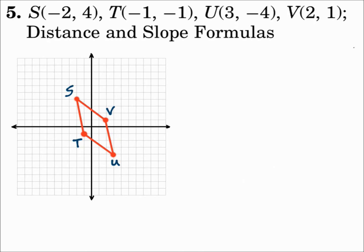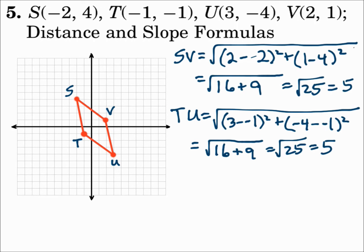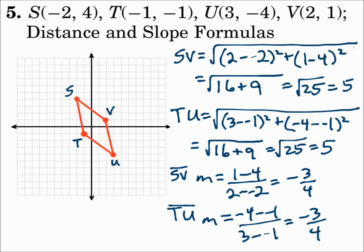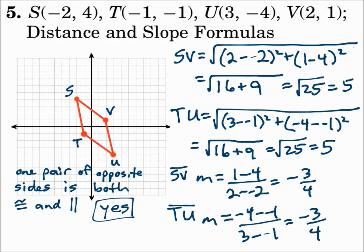Number five gives the vertices and says to use both the distance and slope formulas. Distance tells us if sides are congruent, and slope tells us if they're parallel. We check if one pair of opposite sides is congruent and parallel — sides SV and UT. Using the distance formula, each side has a length of 5, so they're congruent. Using the slope formula, they each have a slope of negative 3/4, so they're parallel. We have one pair of opposite sides that is both congruent and parallel, so yes, it's a parallelogram.